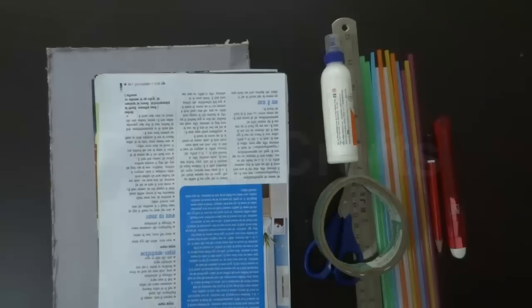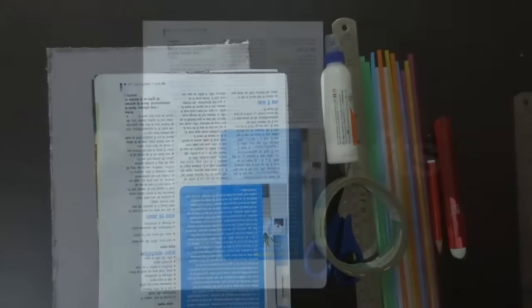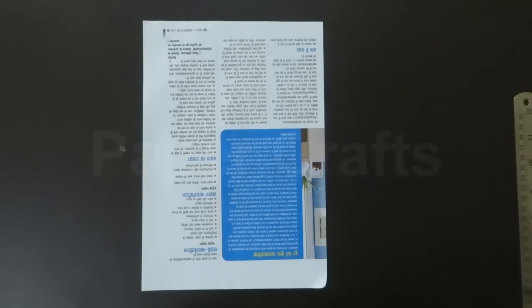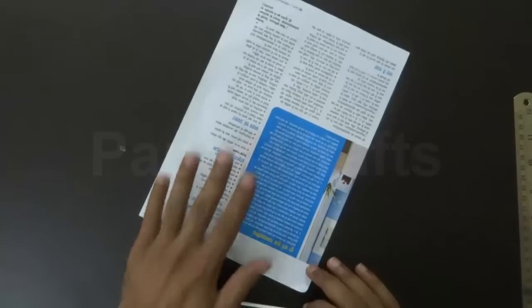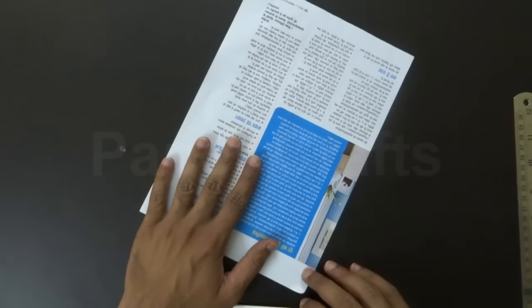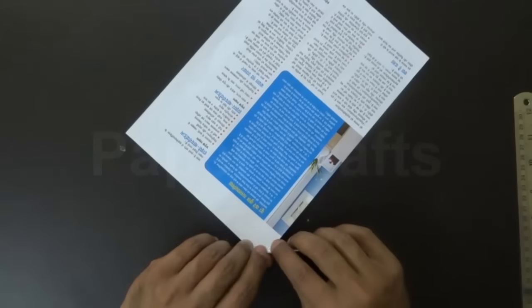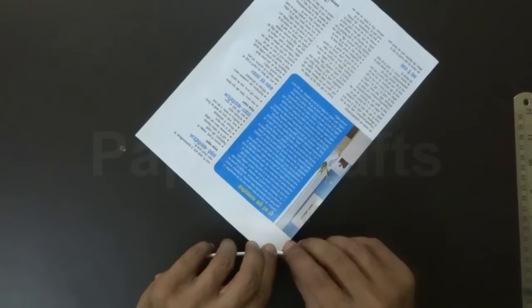Let's start making this multicolored lamp shade. To begin with we'll start with the old magazine paper. Roll the sheet using a pen.